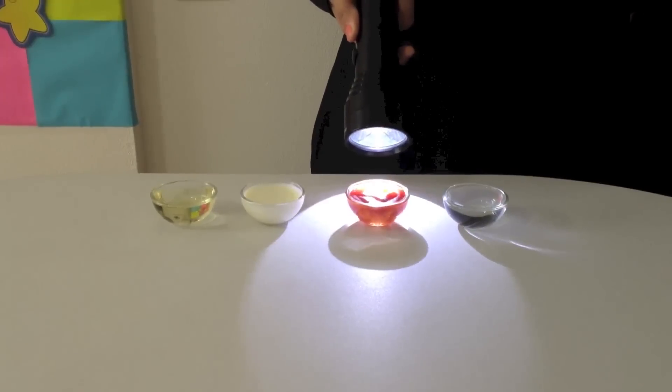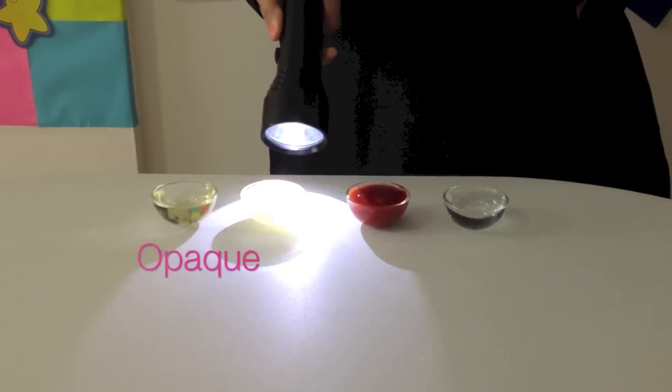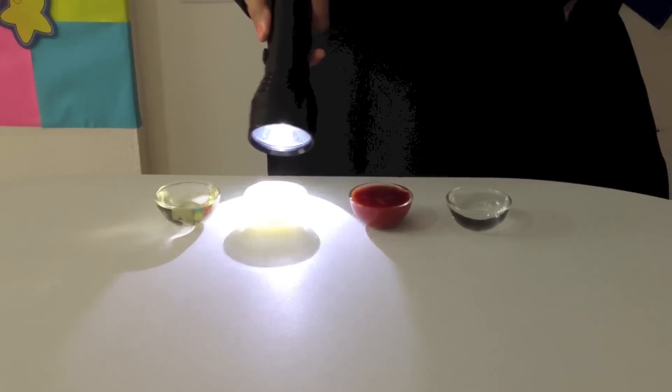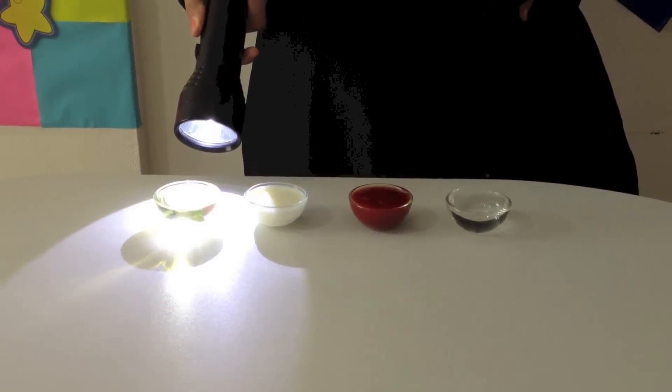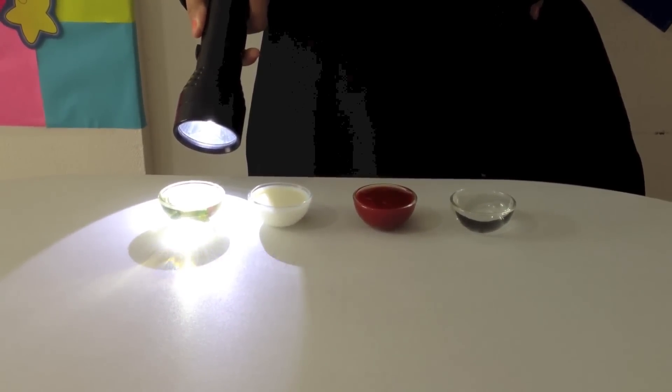In the next bowl, I have ketchup which is opaque because it is blocking the light. Milk is also opaque because it is not letting the light pass through. In the last bowl, I have oil which seems to be translucent because it is partially allowing the light to go through it.